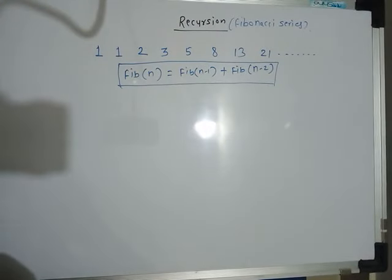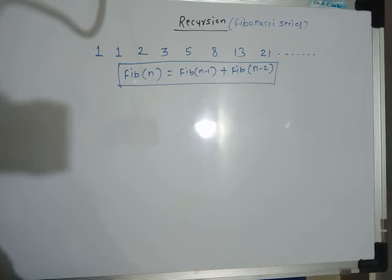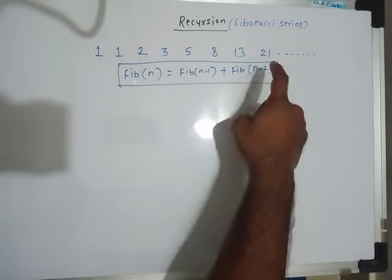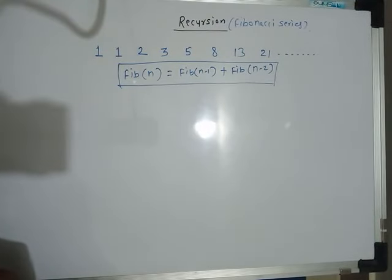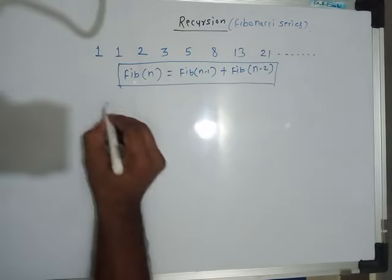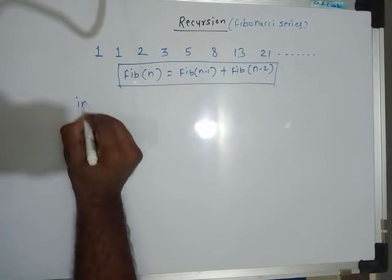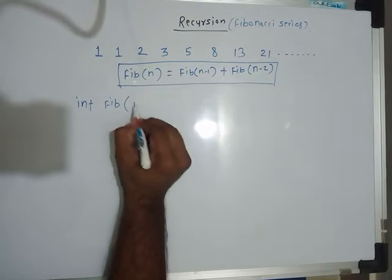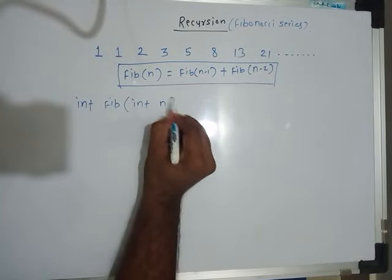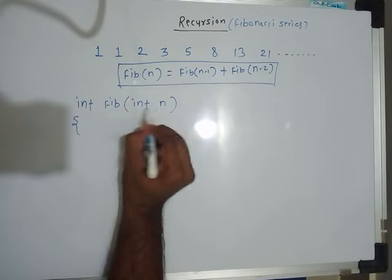We can write a recursive function here because this problem is recursive in nature. The function has return type int, the name is Fib, and it computes the nth Fibonacci number — that's why the parameter is integer n.